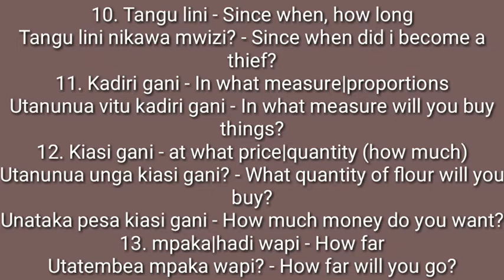Number ten is 'tangulini,' meaning 'since when' or 'how long.' Example: 'tangulini ni kawa muizi?' — since when did I become a thief? Maybe someone is accusing you of stealing something you never stole. Number eleven is 'kadiri gani,' meaning 'in what measure or proportion.' Example: 'utanunua vitabu kadiri gani?' — in what measure will you buy things? 'Kadiri gani' is not very commonly used, but it's good to know.